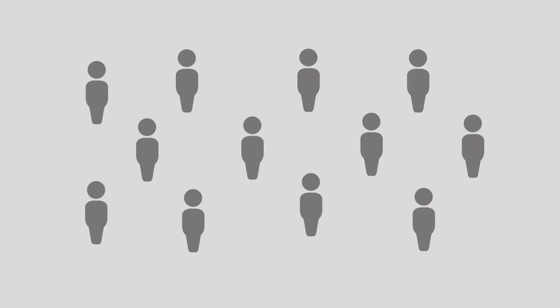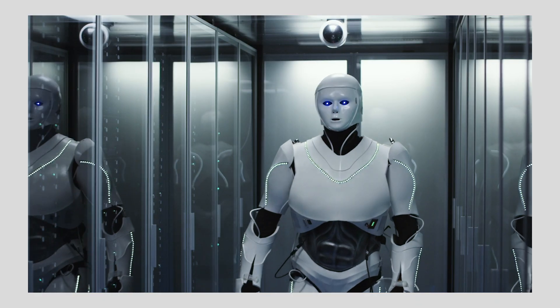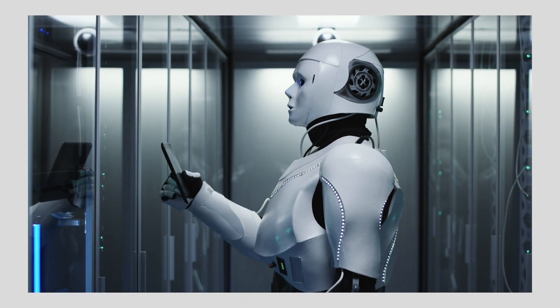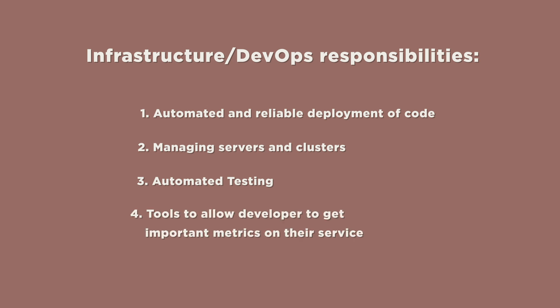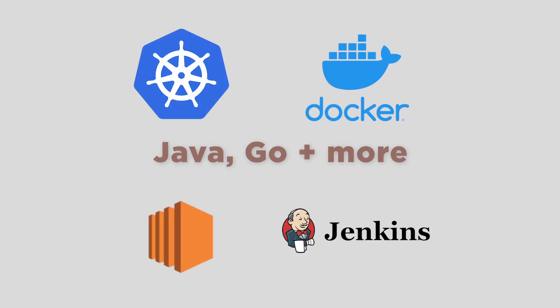The next role is an extremely important one at Netflix. Netflix isn't releasing their product to 12 users — they're releasing it to around 100 million users. So they have to make sure their infrastructure and developer operations are intact. Infrastructure and DevOps engineers are responsible for giving users access to an application — making sure that Netflix can be accessed reliably and at a large scale. They deploy these applications so that hundreds of millions of users can reach them across different countries, which requires very solid infrastructure. Netflix uses languages like Java and Go, among other technologies, for their infrastructure and DevOps work.